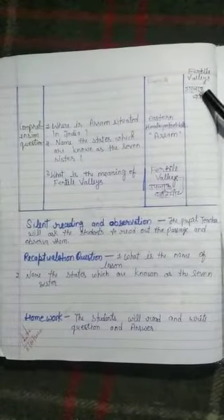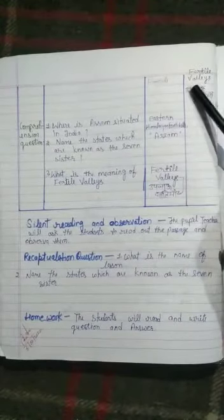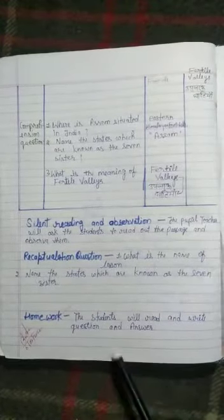Next, Fertile, its meaning is Urvarak, and Valleys, its meaning is Ghati.